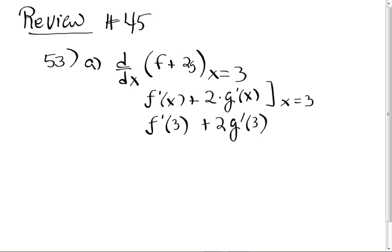Okay. F prime of 3 is 9, I think. Can we keep our quizzes? Yes. G prime of 3 is 9. Is that right? Yeah, they're both 9. So it's 9 plus 18, which is 27.